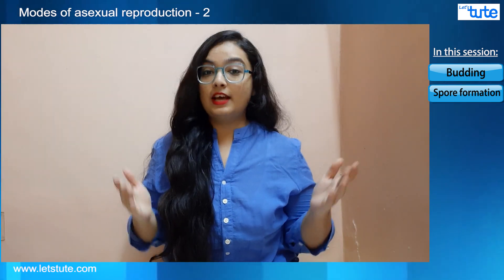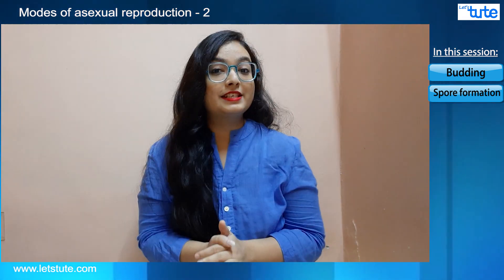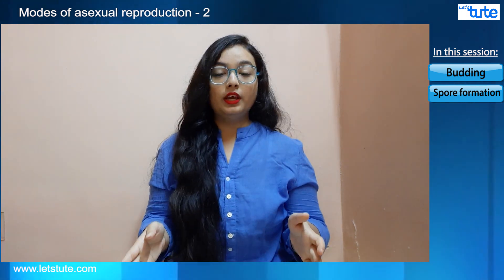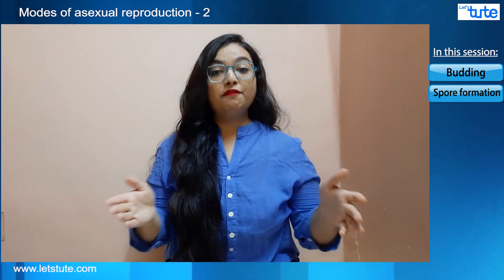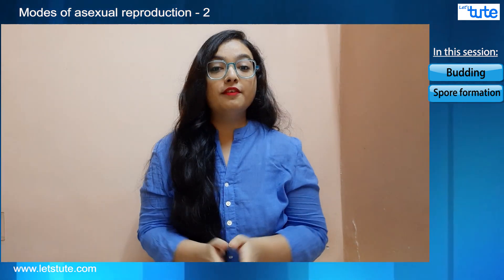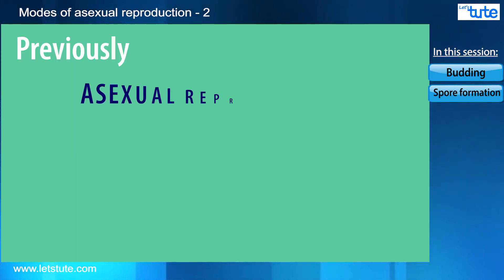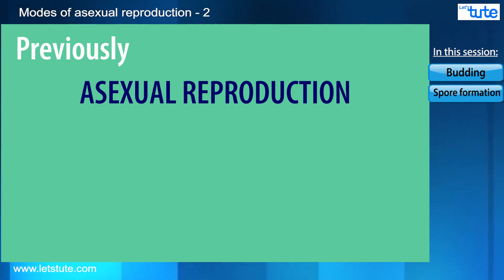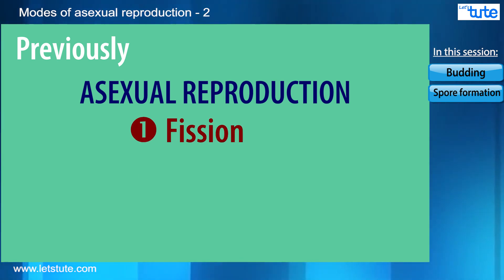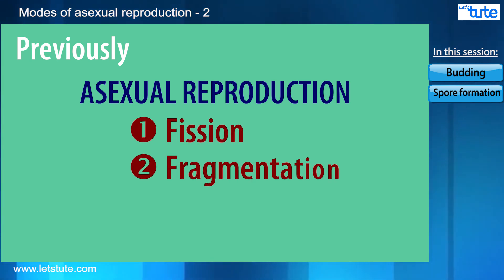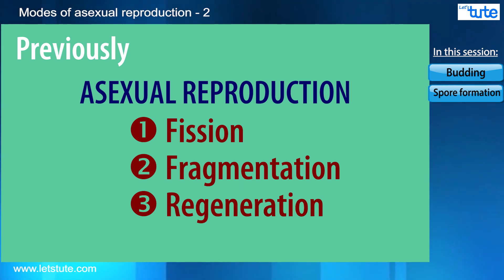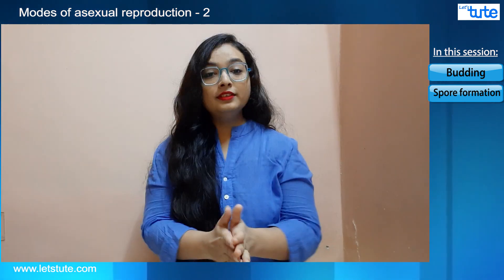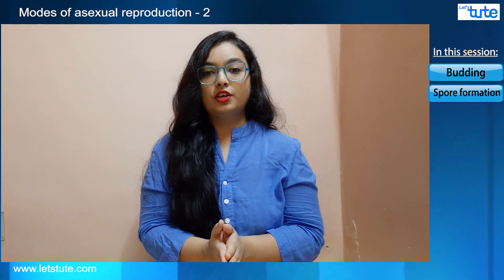Do you remember what we learned in the last video? To remind you all, we were doing different methods of reproduction. The first thing we started with was the asexual mode of reproduction, and so far we have already discussed three methods: fission, fragmentation, and regeneration. So today let's move on to the other three methods of reproduction.